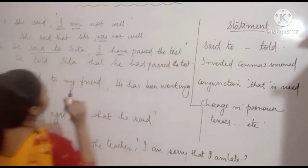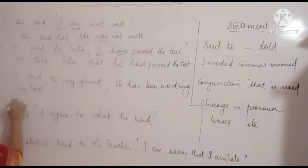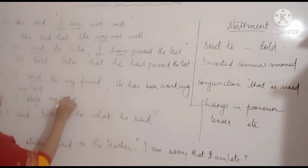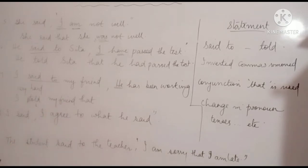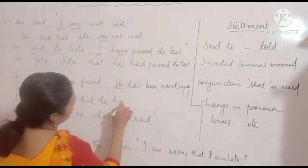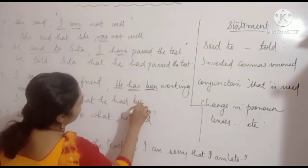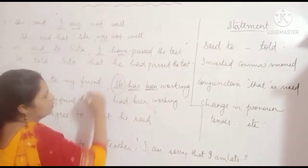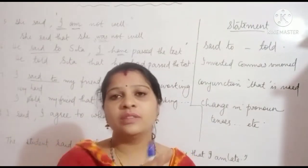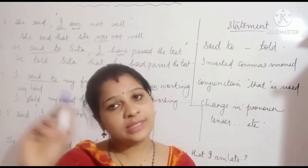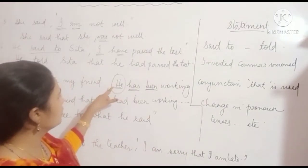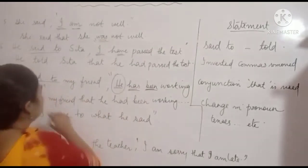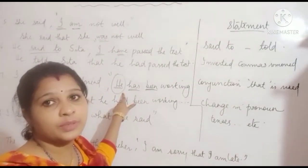Example 7: 'I said to my friend, he has been working very hard.' 'Said to' becomes 'told'. We write: I told my friend that. 'He' is third person — third person pronouns do not change. 'Has been working' changes to past perfect continuous: 'had been working'. Answer: I told my friend that he had been working very hard. Note: first person changes according to subject, second person 'you' changes according to object, third person remains unchanged.